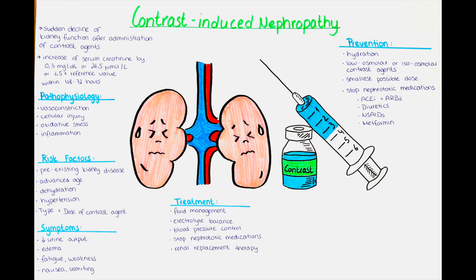Imbalances in electrolytes such as potassium and sodium may occur, and monitoring and correcting these imbalances is important for optimal kidney function. Maintaining blood pressure within an appropriate range is essential for kidney perfusion, and medications may be prescribed to control blood pressure and ensure adequate renal blood flow. If possible, medications that may further compromise kidney function, such as non-steroidal anti-inflammatory drugs and certain diuretics, should be temporarily discontinued or adjusted.